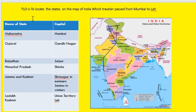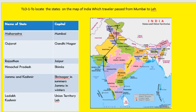The first targeted learning outcome of chapter 13 is to locate the states on a map of India which the traveler Gaurav Jain passed through, from Mumbai to Leh. He started his journey from Mumbai, then passed through Gujarat, Rajasthan, Delhi, Himachal Pradesh, Ladakh in Jammu and Kashmir, and then came back to Mumbai. The states include Maharashtra (capital Mumbai), Gujarat (capital Gandhinagar), Rajasthan (capital Jaipur), Himachal Pradesh, and Jammu and Kashmir. Ladakh is a union territory whose capital is Leh.